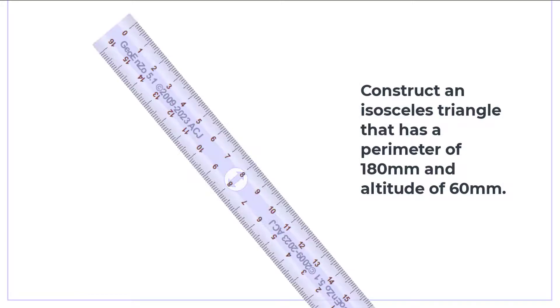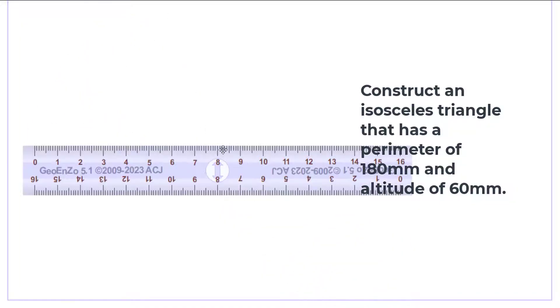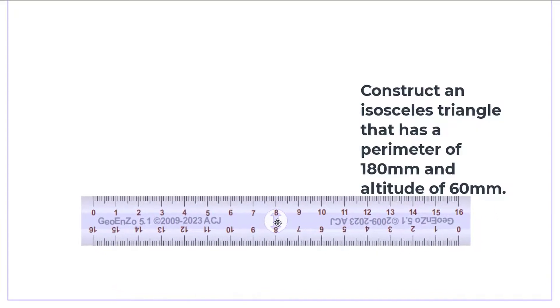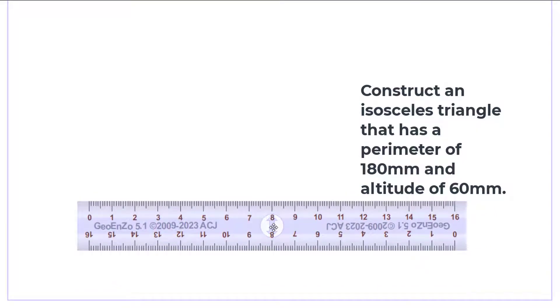Welcome to today's lesson. In this lesson, we shall consider the construction of an isosceles triangle given the perimeter as 180 millimeters and the altitude of 60 millimeters. The first thing to do is to draw a horizontal line and mark point A.